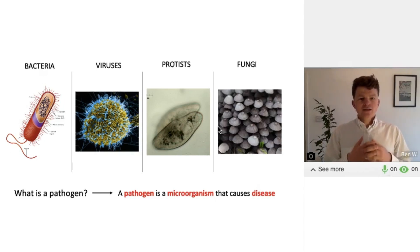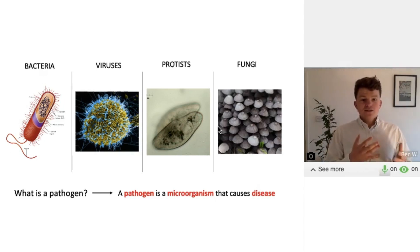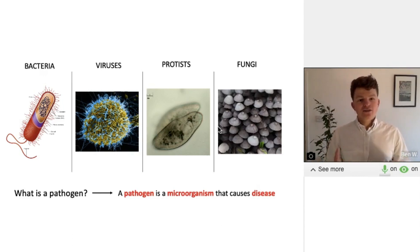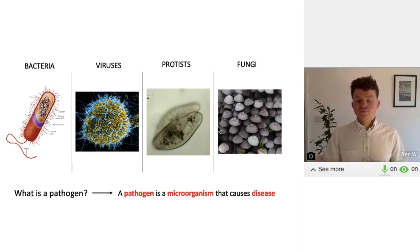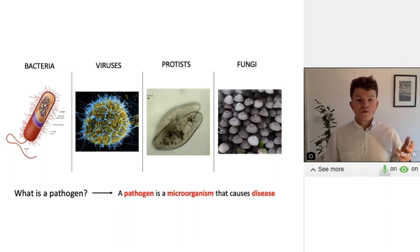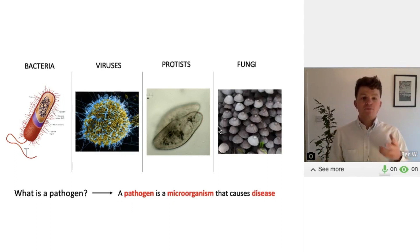So what are some examples of pathogens? Well, bacteria firstly can be pathogens. This could be things like E. coli, which you can get from contaminated water, or salmonella, which you can get from poorly prepared food.